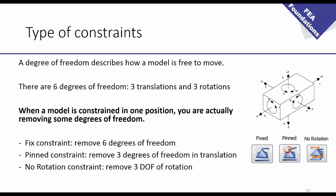So, for example, you have 3 main types of constraints. We have what is called the fixed constraint, which is removing the 6 degrees of freedom. You have the pinned constraint, which is removing 3 degrees of freedom in translation only, so it allows the rotation.